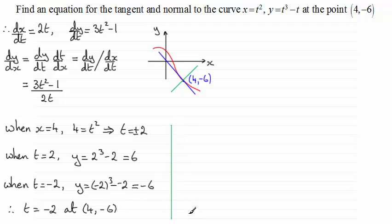So now we're in a position to work out the gradient of the tangent just by substituting t equals minus 2 in here. So when t equals minus 2, we can get dy by dx, the gradient m of the tangent. So dy by dx will equal 3 times minus 2 all squared minus 1, all divided by 2 times minus 2. And if you work this out we get 11 on the top, minus 4 on the bottom, so we've got minus 11 over 4.